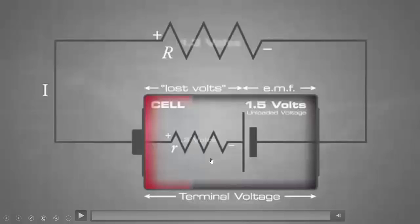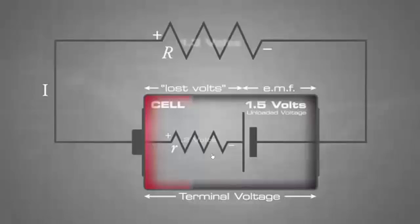So, small r represents the internal resistance offered in the cell by the electrolyte, and the unloaded voltage is the EMF value. The terminal voltage is what the cell provides when in use — here the value becomes 1.3 V — so there is some energy lost: that energy is 0.2 V. This illustrates the difference between terminal voltage, lost voltage, and EMF.